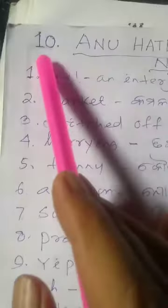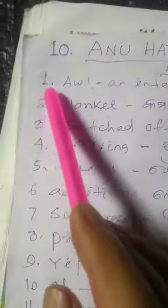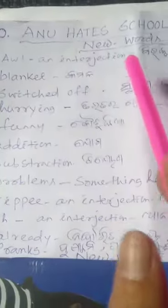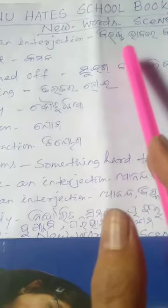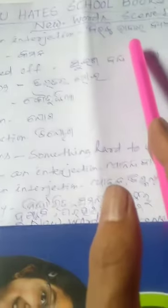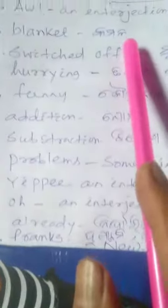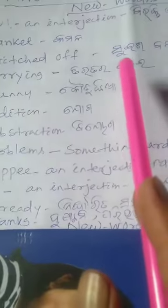Again. Number 1: An Interjection — यहाँ, बिरक्ति भावापाईं, बेभार करा जाए. Number 2: Blanket — Kamalo. Number 3: Swit Yap — Swiss bond kariva.